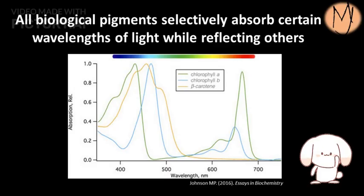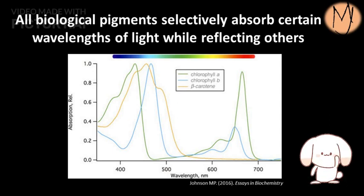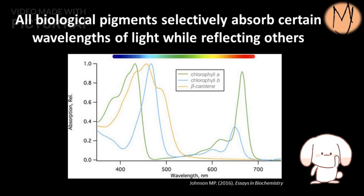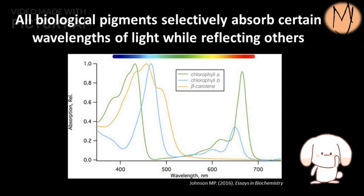All biological pigments selectively absorb certain wavelengths of light while reflecting others. In this figure, you can see the absorption spectrum for chlorophyll A, B, and beta-carotene. Note at which wavelengths they have maximum and minimum absorptions.